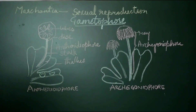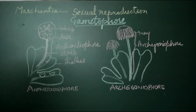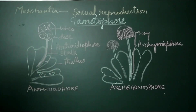Sexual reproduction in Marchantia. In Marchantia, the sex organs are borne on specialized stalks called receptacles, and these are called gametophores.